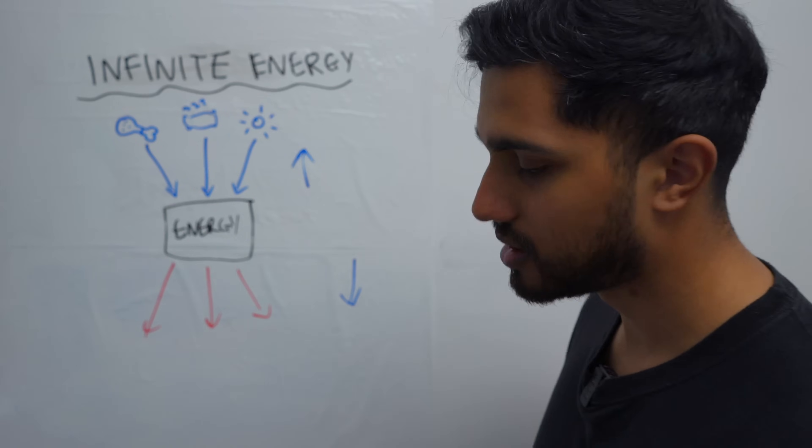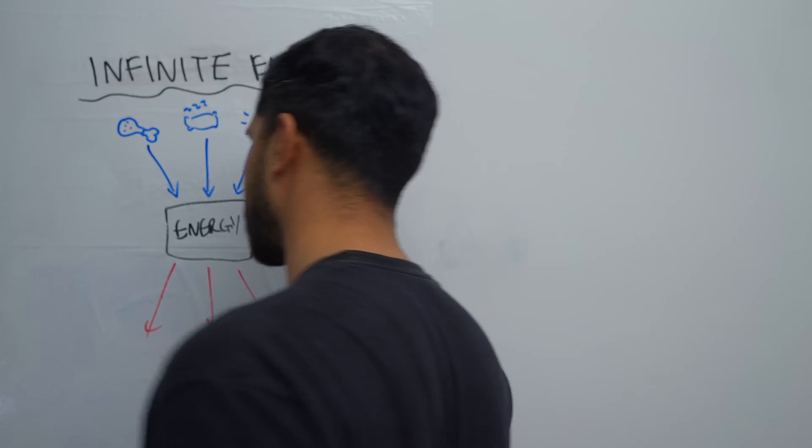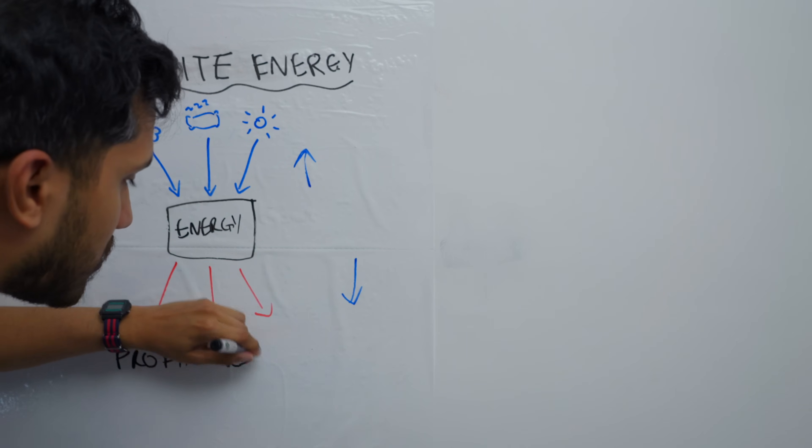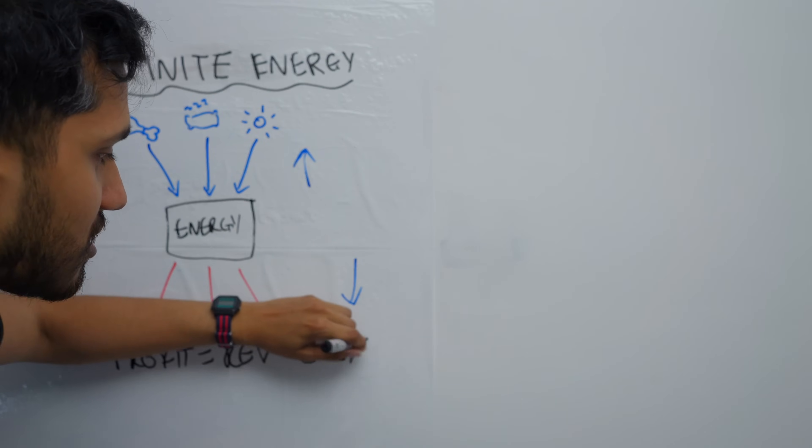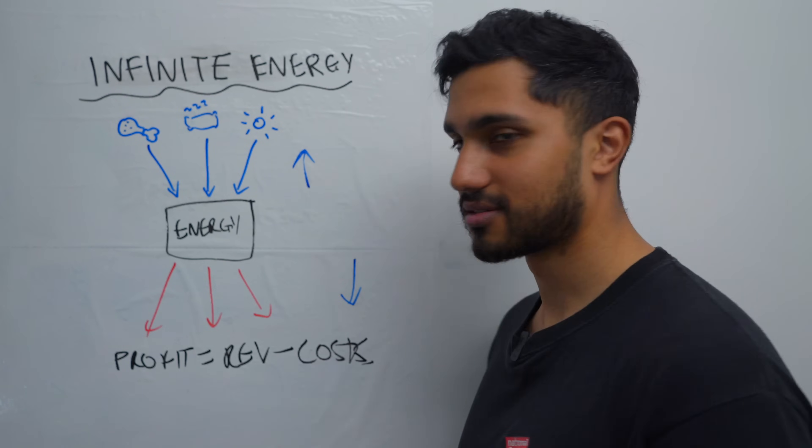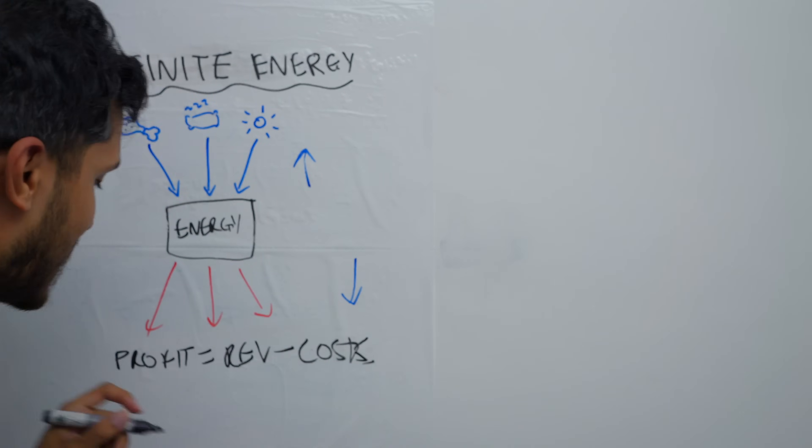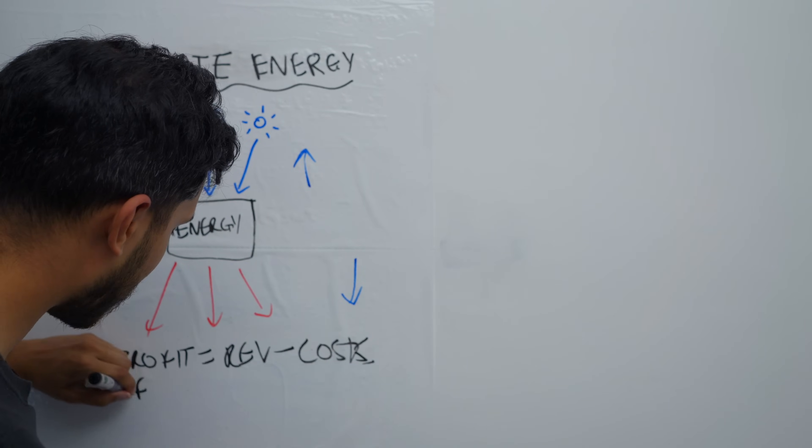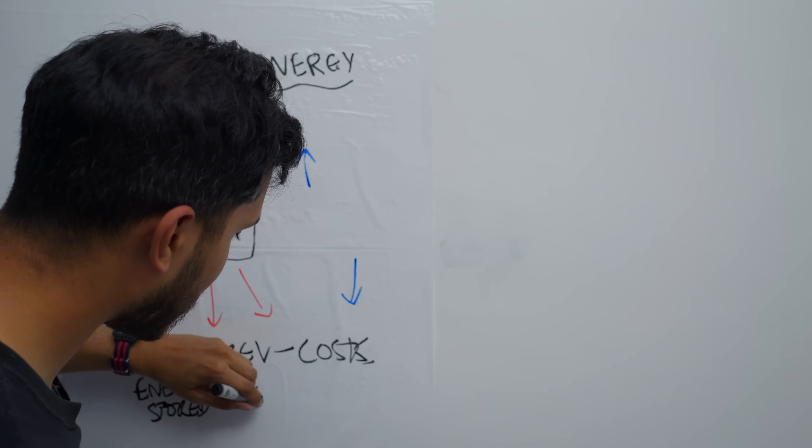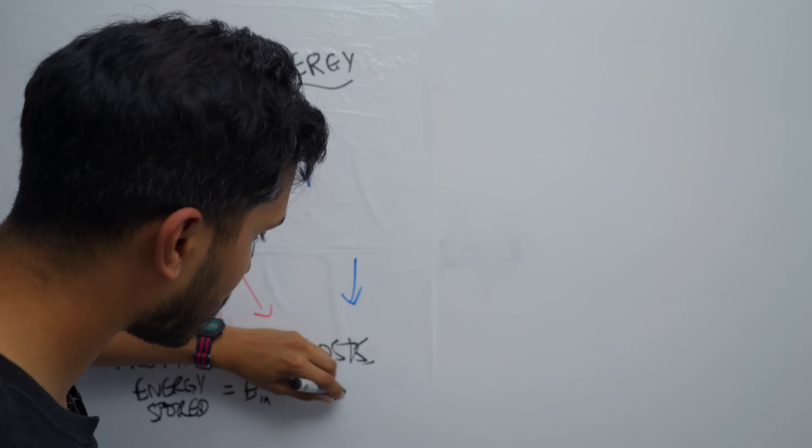Basically speaking, you can think of your energy as the profit that you have from ins and outs. So profit is revenue minus costs. Revenue minus costs, ins minus outs. Simple, right? So the amount of energy that you have to do any action, the energy that you have stored in yourself equals the energy in minus the energy out.